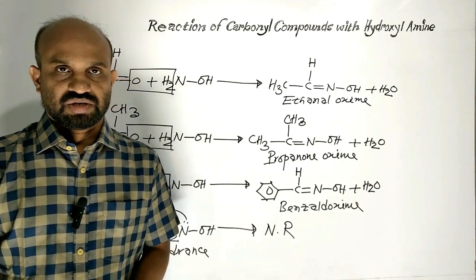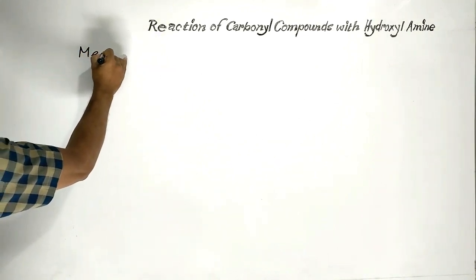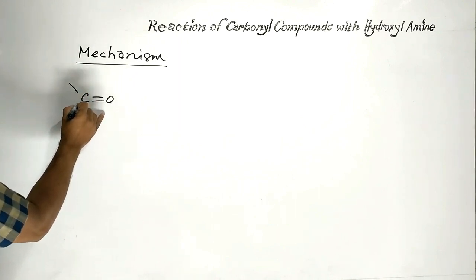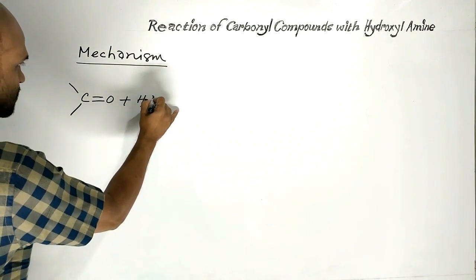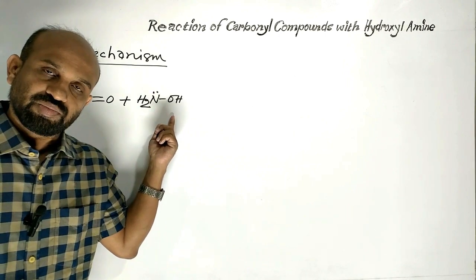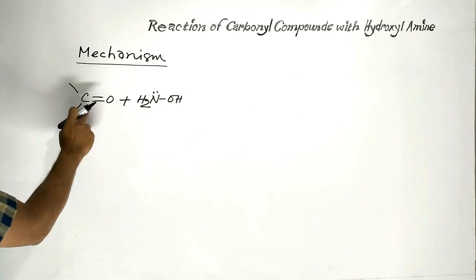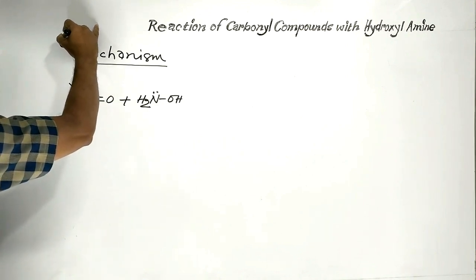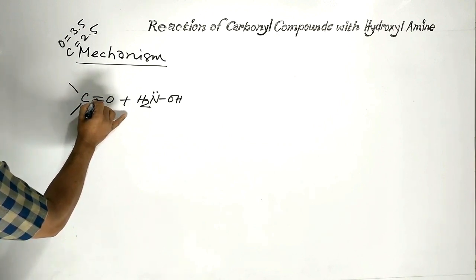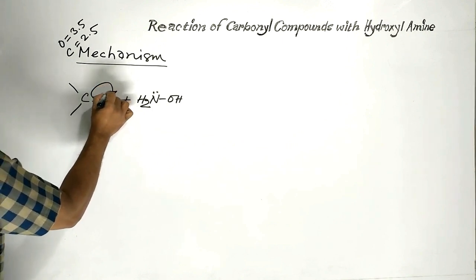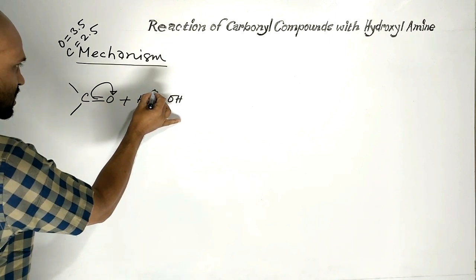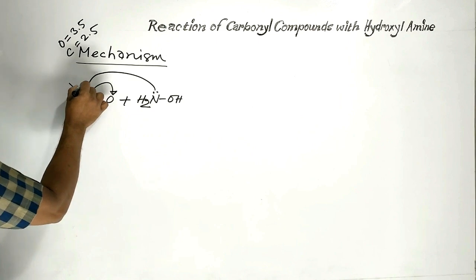Now let us see the mechanism of the reaction. The functional group of carbonyl compounds reacts with hydroxylamine. Nitrogen contains one lone pair of electrons, and that is why hydroxylamine acts as a nucleophile. Here, the carbon-oxygen bond gets polarized because the electronegativity of oxygen is 3.5 and carbon is 2.5. That is why the pi-bonded electrons of the carbon-oxygen bond move to oxygen. Oxygen gets a negative charge and carbon gets a positive charge.